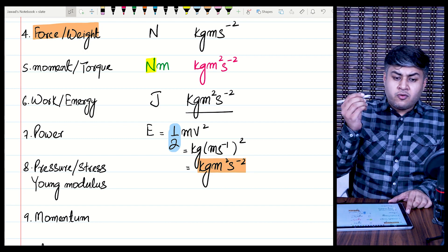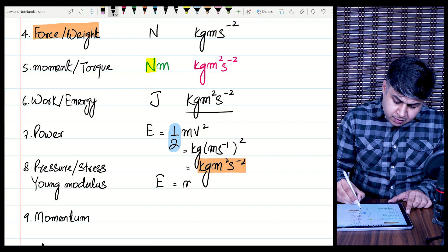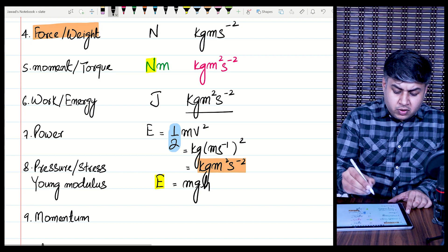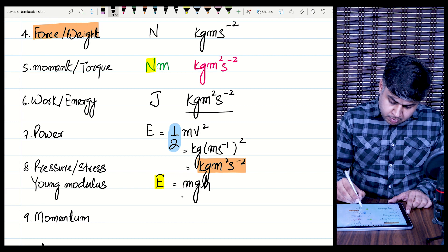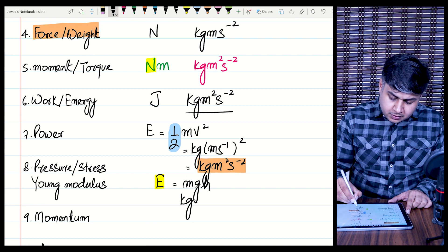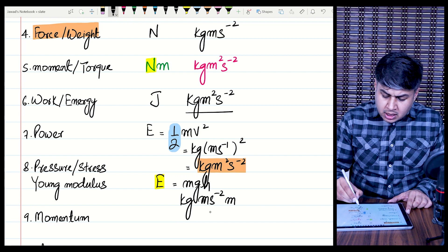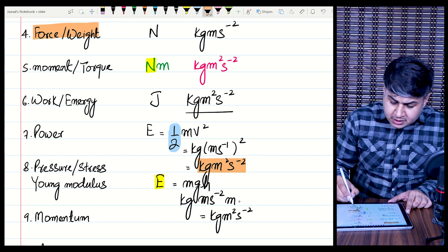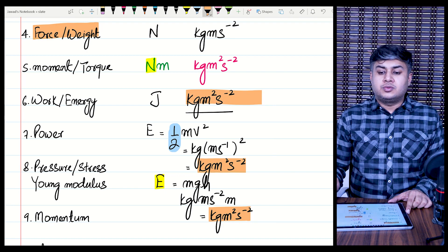Another formula for energy is gravitational potential energy: E = mgh. The unit of mass is kg, the unit of g is m·s⁻², and the unit of height h is meters. Upon simplification, you once again get kg·m²·s⁻², which is the same as the unit of work.